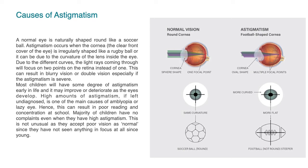The causes of astigmatism. A normal eye is naturally shaped round like a soccer ball. Astigmatism occurs when the cornea, the clear front cover of the eye, is irregularly shaped like a rugby ball or football, or it can be due to the curvature of the lens inside the eye.